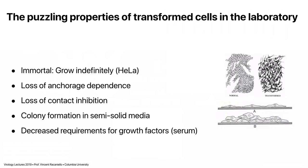Transformed cells have many properties that are different from normal cells. Normal cells — from an embryo primary culture — are not immortal. But transformed cells, like HeLa cells, are immortal. HeLa cells were taken from the tumor of a woman in 1951. She had a cervical tumor — a virus-transformed tumor, which we're going to talk about today. Those cells live forever. You don't have to use an embryo; you could take primary cells from other sources as well.